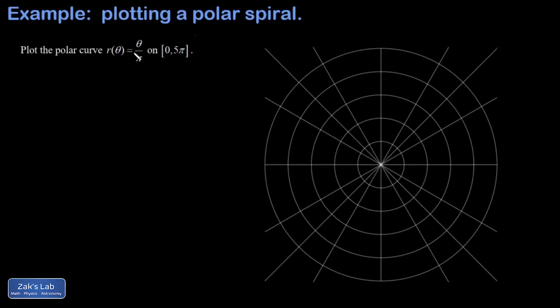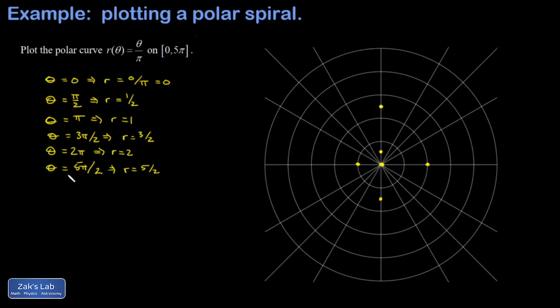To get a sense for what it's doing, we can start to plot specific points. When θ = 0, r = 0/π = 0, and I'm at the origin. When θ = π/2, r is that angle divided by π, so it's 1/2. When θ = π, r = 1. I'm going to keep going this way until I get to the very end. I'll just fast forward that. Now it might be a little confusing at first.